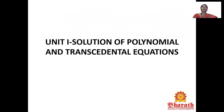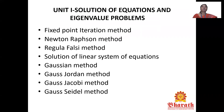In Unit 1, Solution of Polynomial and Transcendental Equations, we are going to deal with the topics: Fixed Point Iteration Method, Newton-Raphson Method, Regula-Falsi Method, and Solution of Linear System of Equations. In the Solution of Linear System of Equations, we are going to deal with four types of methods — two direct methods and two indirect methods.